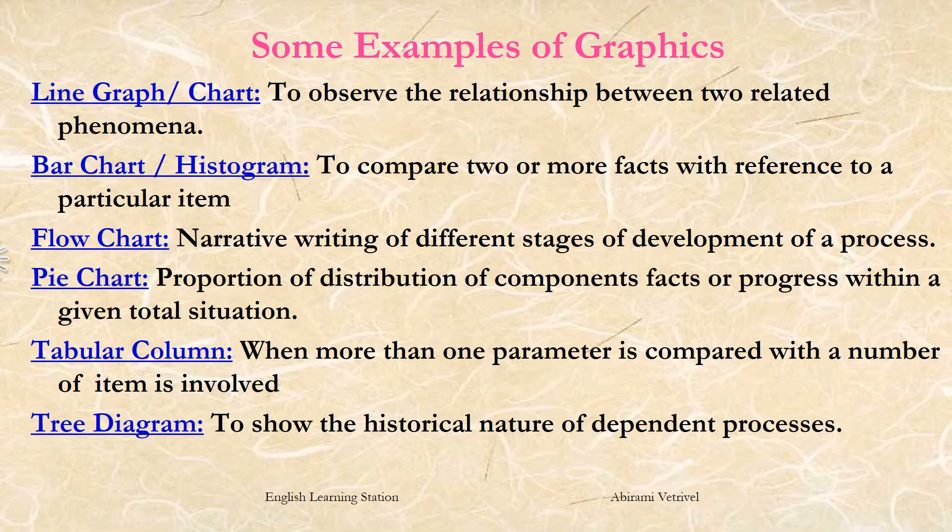There are different types of graphical representations and let us learn the significance of each of them in detail. The first is the line graph. We use a line graph to observe the relationship between two related phenomena. Line graphs represent how data has changed over time and are especially useful to demonstrate a trend or numbers that are connected — for example, how sales vary within a year. Line graphs can also show dependencies between two objects during a particular period.